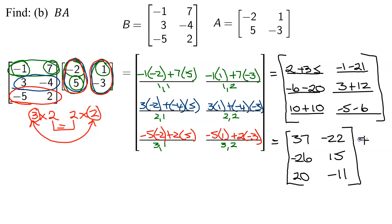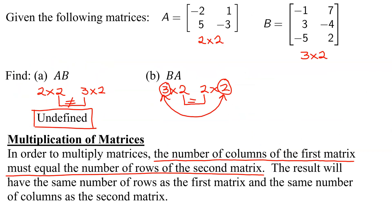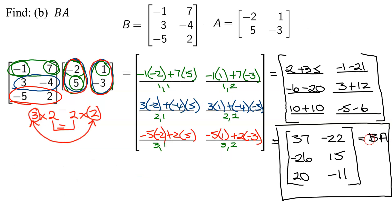So that is my answer for B times A. One last thing I want to point out is that we couldn't find AB, but we found BA. So AB does not equal BA in this case, and unlike in arithmetic, where two times three equals three times two, with matrices, the order in which you multiply them is very important.